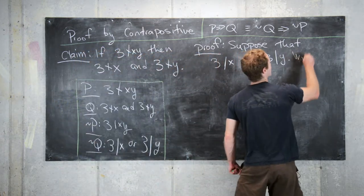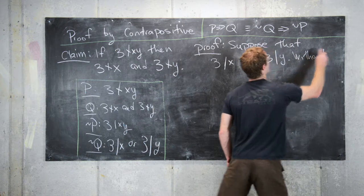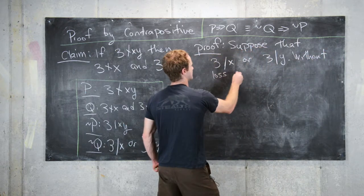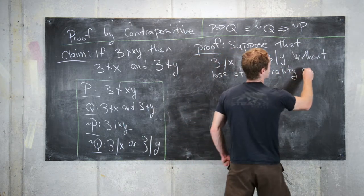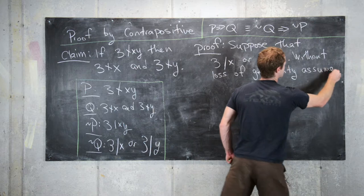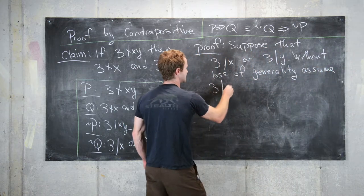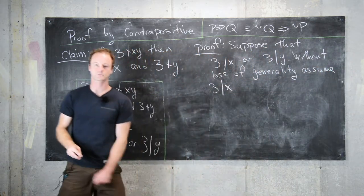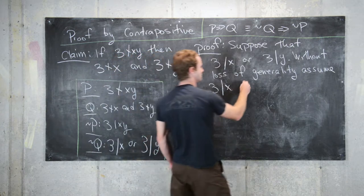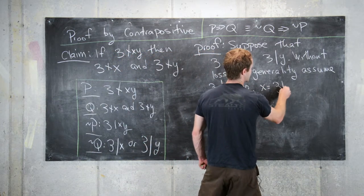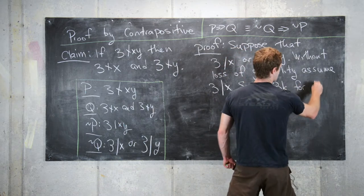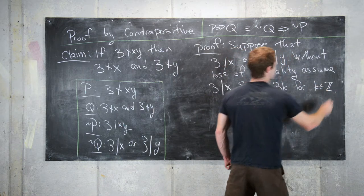Without loss of generality, assume 3 divides X. By definition, that means that X equals 3 times K for some integer K.